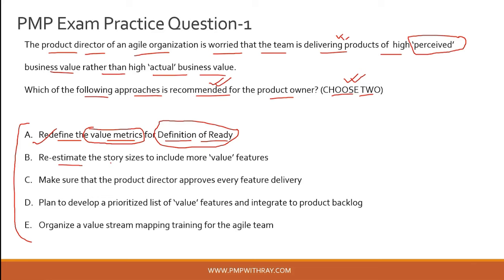Option B: reestimate the story sizes to include more value features. That is quite broad. You can reestimate story sizes to include more value features, but the question remains whether these value features will be actual values or perceived values. This option doesn't give confidence that it will bridge the gap between perceived value and actual value in the customer's mind. So Option B is incorrect.